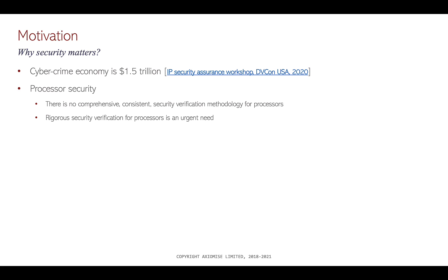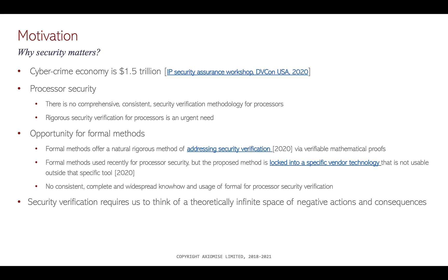Processor security — the problem is we've all heard of Meltdown, Spectre, and a range of other vulnerabilities that have since been coming out. Hardware security in general has not been as well understood as software security, but processor security in particular, although more understanding is being gained, there is no comprehensive, consistent security verification methodology for processors. Rigorous security verification for processors is an urgent need, and here's an opportunity for formal methods.